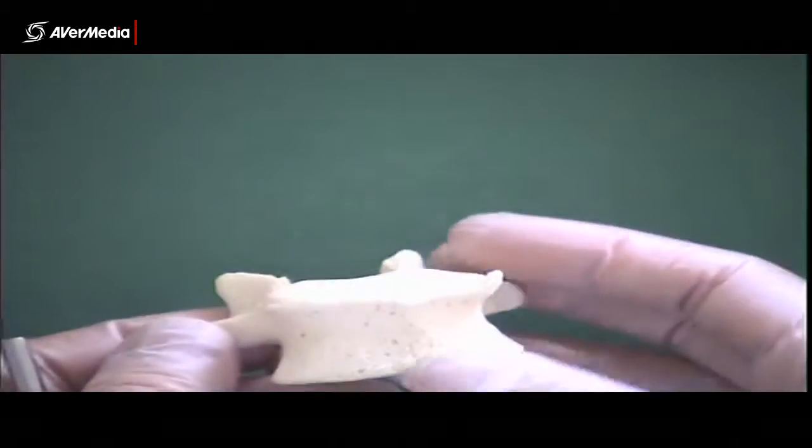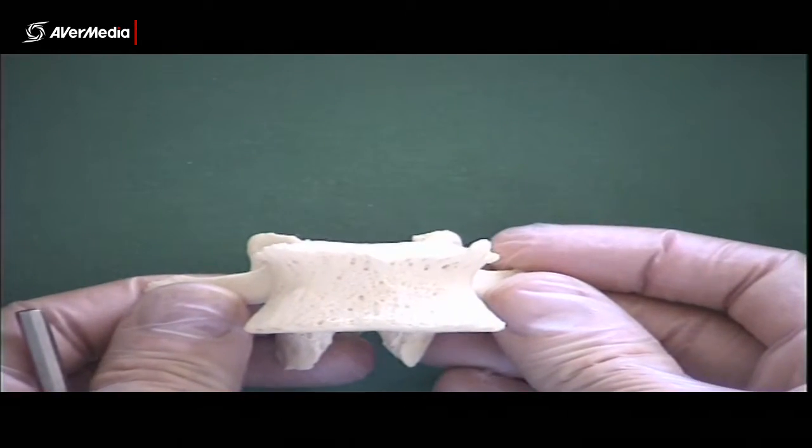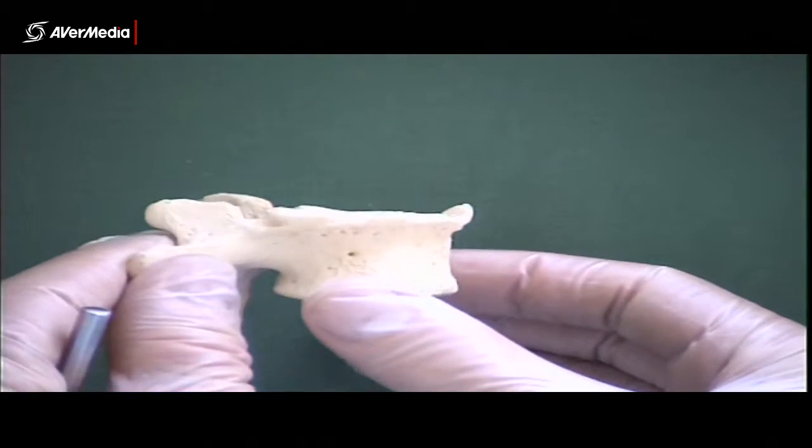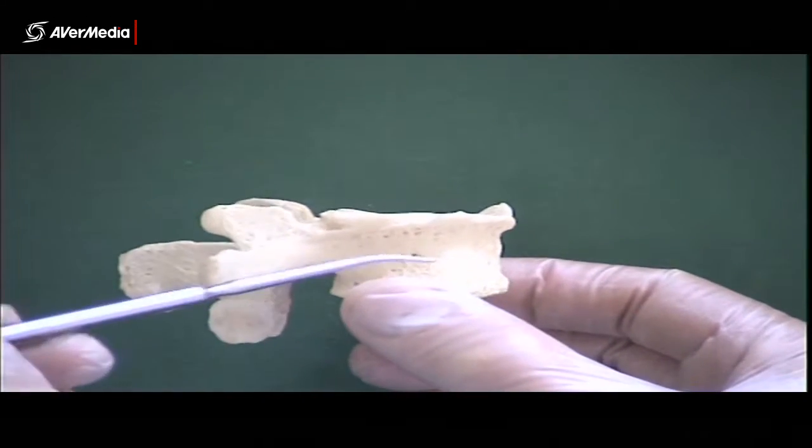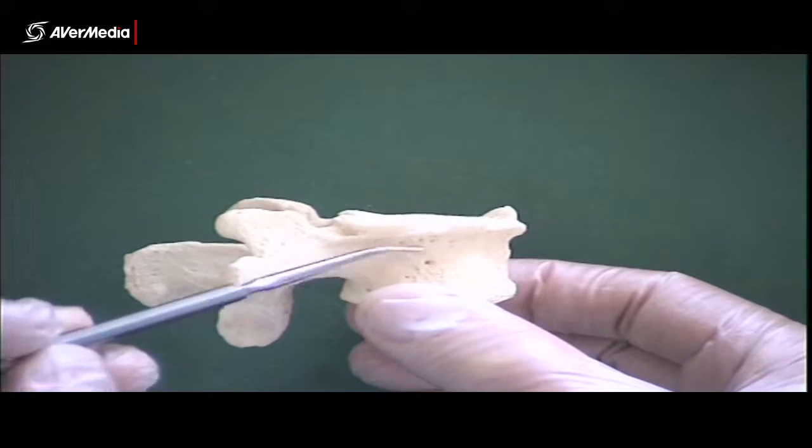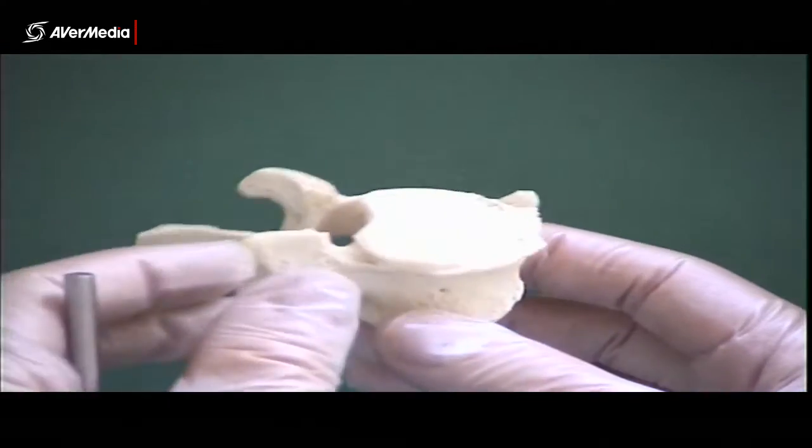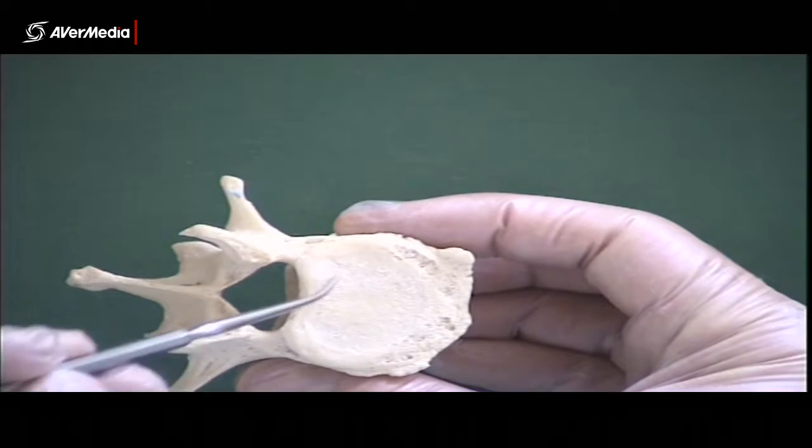And now let's just have a look at one single vertebra. So now we're looking at an anterior point of view. If we just turn it around, so we're looking at a lateral point of view, you can see here on the anterior aspect of it is the body. So seen from above, superior point of view, there's the body.